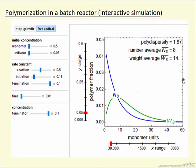The number average is reported here, and the weight average here, and then the polydispersity is the ratio of these two values. We also have step growth polymerization, which shows different behavior, and we'll look at that when we look at the interactive simulation.